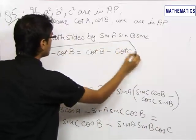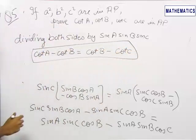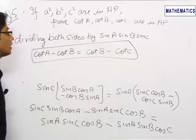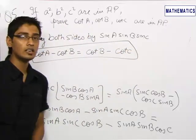So cot A minus cot B equals cot B minus cot C which proves the given relation that cot A, cot B and cot C are in AP.